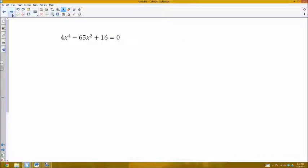4x to the fourth minus 65x squared plus 16. So again, this is of quadratic type. How do I know? Well, I have a variable 2 and 4 is double 2. So since this exponent is double this exponent and it's a trinomial, this is of quadratic type. So I could solve it a lot like a quadratic equation. First, I'm going to notice that I'm going to think of u as x squared.